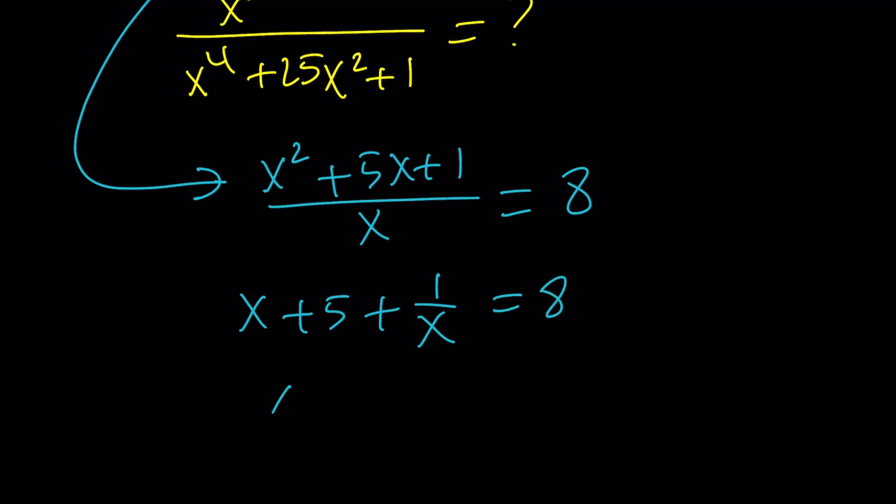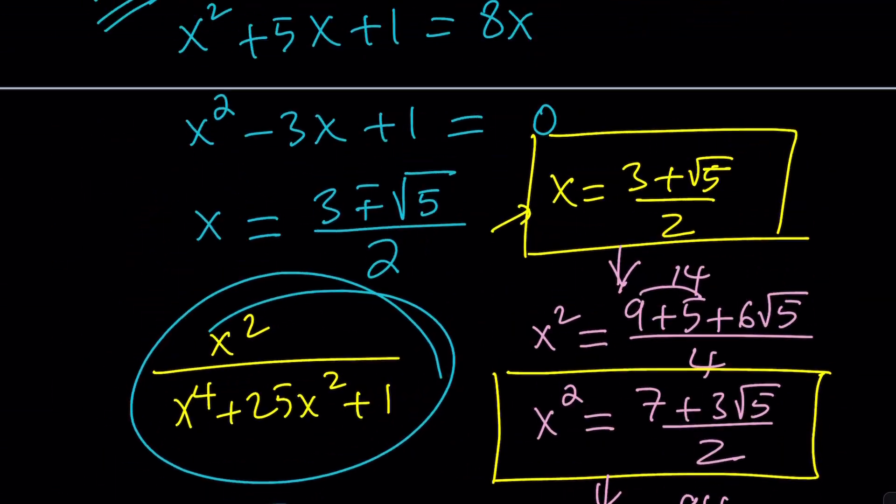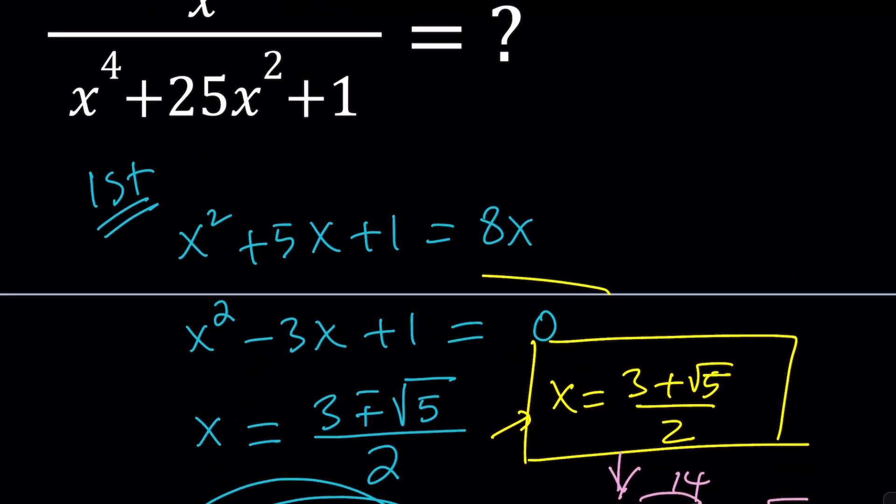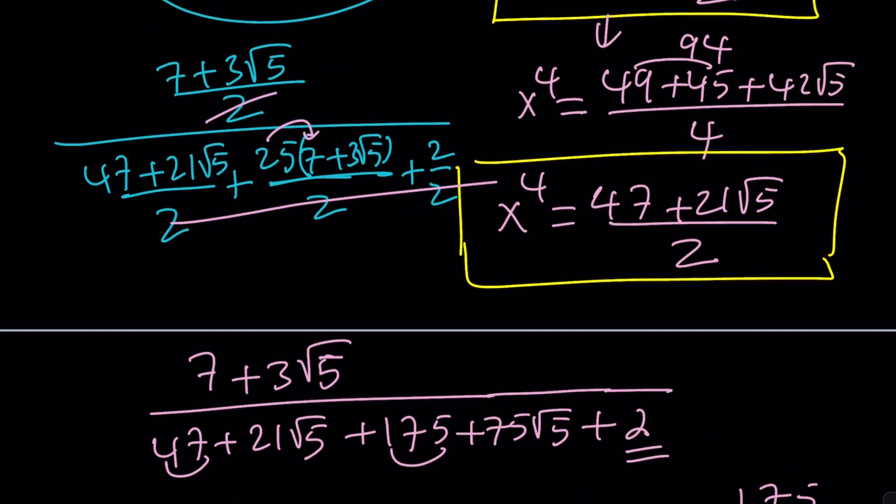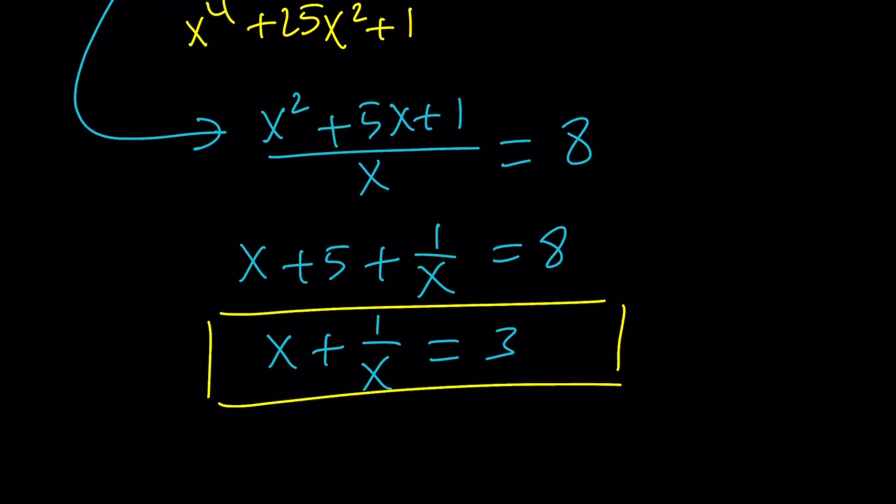Now what is that equal to? Split, like divide everything by x. You're going to get x plus 5 plus 1 over x equals 8. And what's even better is you can subtract 5 and get x plus 1 over x. Does that look familiar? Yes. If you make a common denominator, you're going to get the exact same equation that we got with the first method. Same thing because it's the same x value we're talking about. By the way, we didn't test the one with the minus sign, but if you do, you're going to get the same thing.